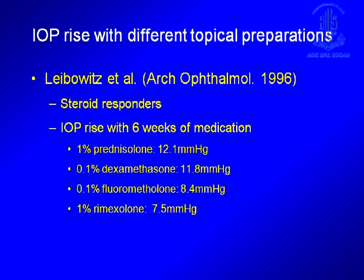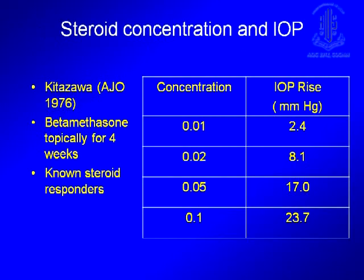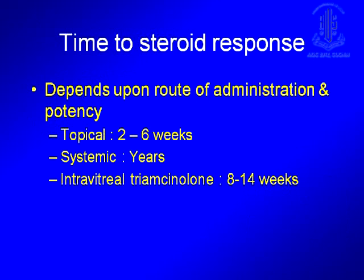Even with the so-called non-IOP-raising steroids like FML, you would still see an IOP elevation of almost 8.4 mmHg in those who are susceptible to a steroid response. As the concentration of the drug goes up, so does your intraocular pressure response to the drug. Typically you can expect to see a steroid response anywhere between 2–6 weeks. Systemic steroids usually take much longer to result in an IOP spike, and intravitreal triamcinolone typically takes 8–14 weeks.